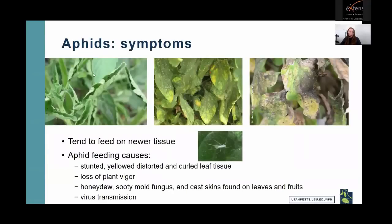Symptoms of aphid feeding appear on newer leaf tissue and include stunted or curled leaves — which can protect aphids from insecticides — yellowed or distorted leaves, and loss of plant vigor. Aphids also secrete a sticky, clear honeydew that can attract sooty mold, and they leave behind cast skins, which are another identification tool. Those little white dots visible in close-up images are those cast skins.